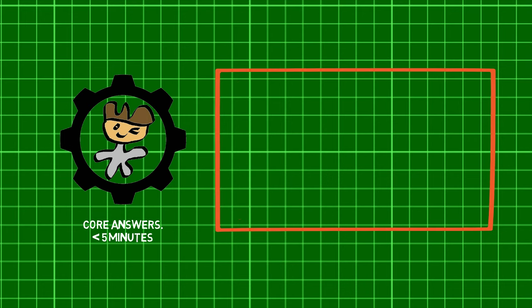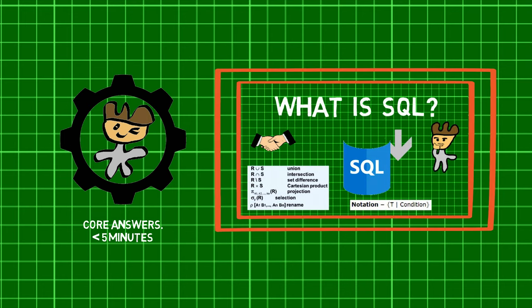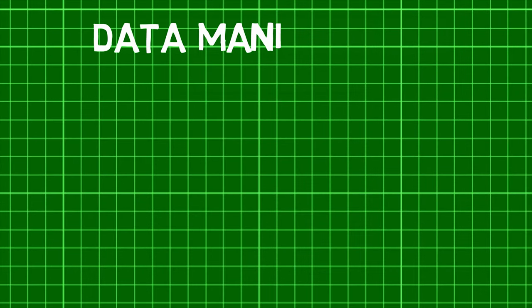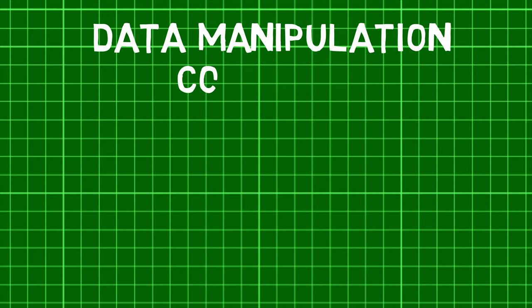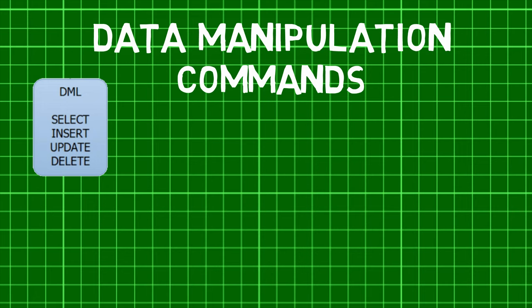Before we jump in, refer to the previous part of this series to learn about what SQL is. Data manipulation commands, as the name suggests, are used to retrieve and manipulate data in a relational database. These are a part of data manipulation language, or DML.